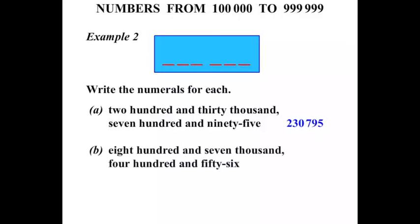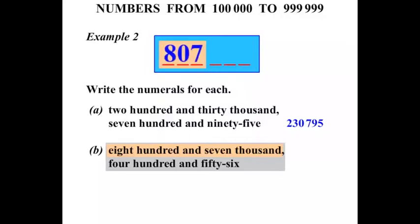The next one: 807,456. Again, let's consider the first part — 807,000. Taking the first three digits: 807. Then we have 456 for those last three digits: 456.